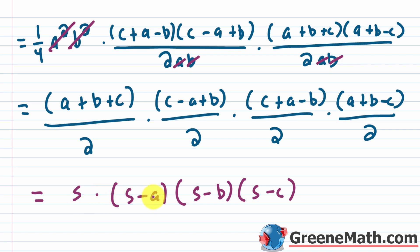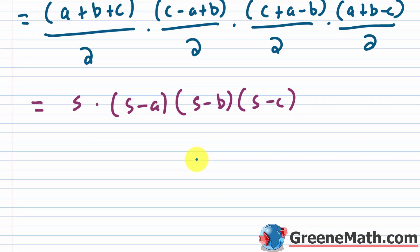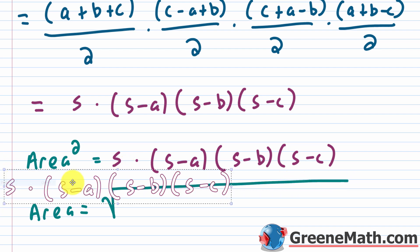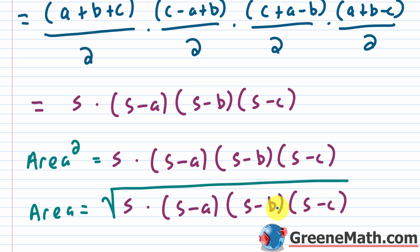Since area squared equals S(S−A)(S−B)(S−C), we take the principal square root to get the area. So the area equals the square root of S times the quantity S minus A times the quantity S minus B times the quantity S minus C. That is Heron's formula, where S is the semi-perimeter (A plus B plus C) divided by 2. As long as you're careful with signs throughout the derivation, this is the most straightforward way to derive it.